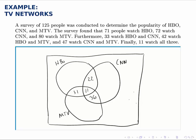Now that we've done all the intersections, we can start working outward to the rest of the circles. So for instance, HBO as a whole has 71 people in it. But we've already accounted for 22, 11, and 31. That's a total of 64 right because we have 22 plus 11 is 33 plus 31 is 64. So there are 71 people in the HBO circle. We've already counted 64 of them though. So we take 71 minus the 64 we've already counted to get 7 that are outside the intersections but still inside HBO.